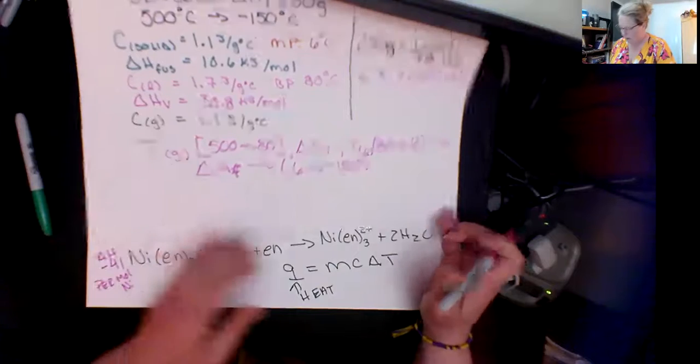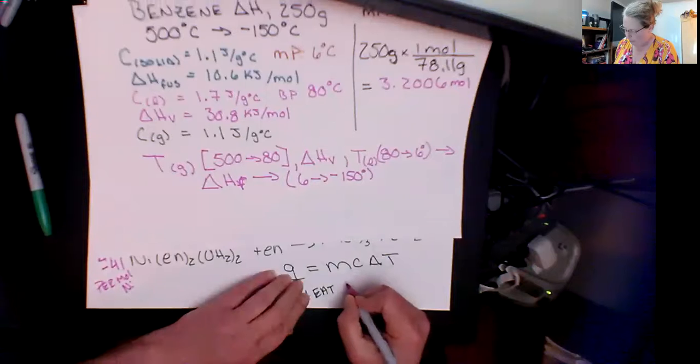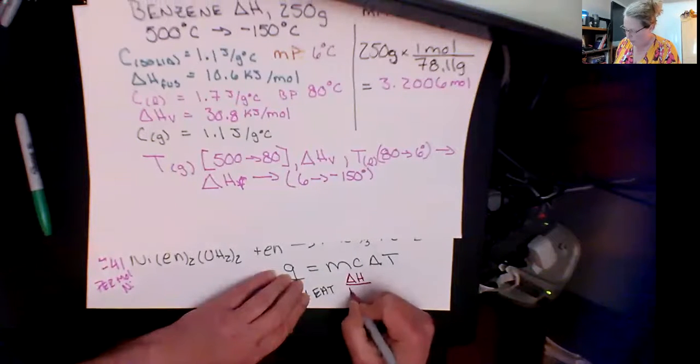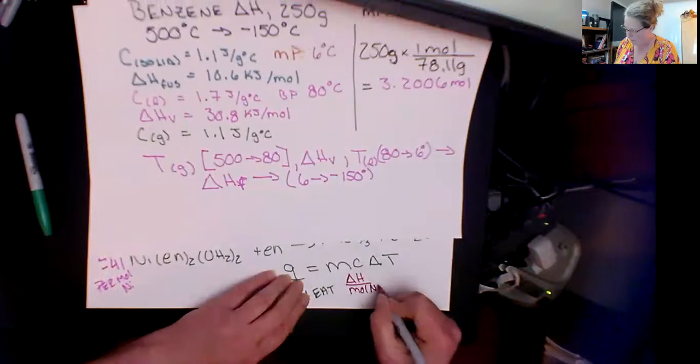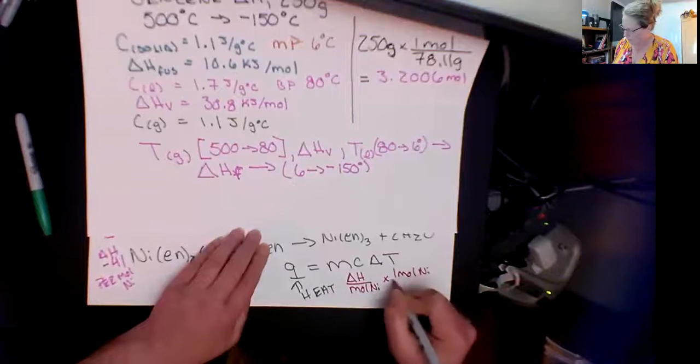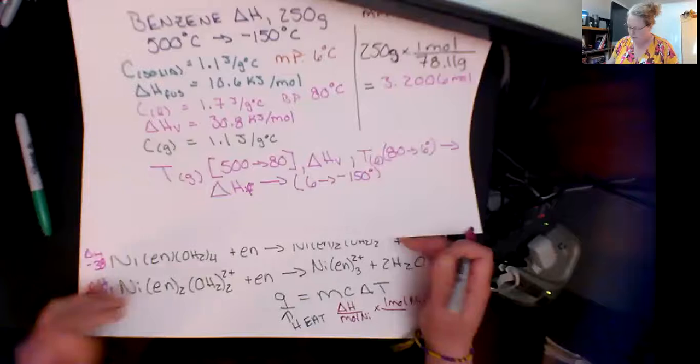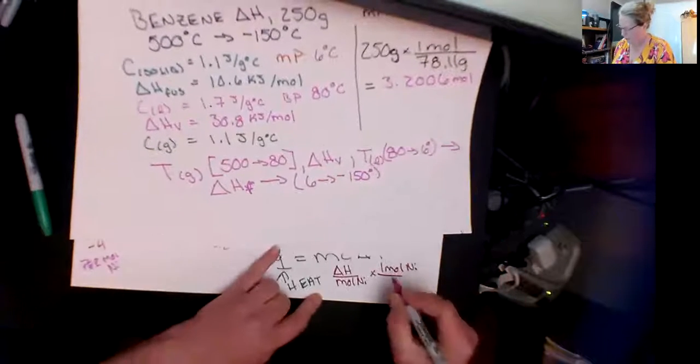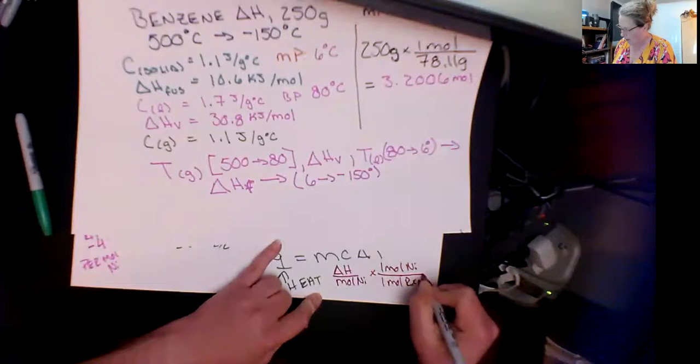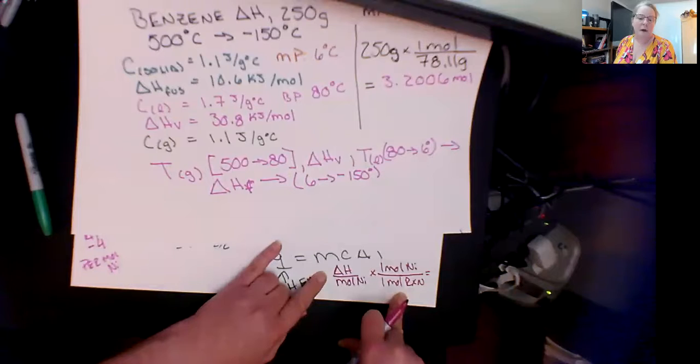I can say if I want to change Delta H into a true enthalpy of reaction I would have Delta H per mole nickel times one mole nickel per one mole of reaction. In the end that puts my enthalpy value in terms of moles reaction. That's an important thing to remember.